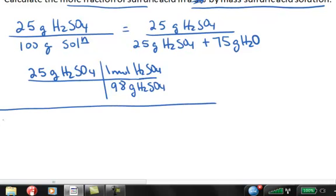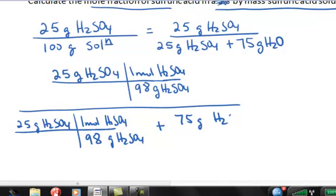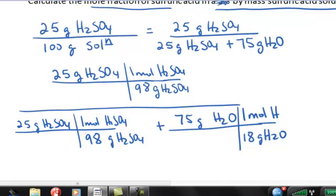And I can just then do the same conversion down here. I'm going to plug it all into my calculator at once, times one mole of sulfuric acid per 98 grams of sulfuric acid, plus the 75 grams of water. And I'm going to convert that to moles. And the molar mass of water is about 18 grams of water per one mole of water.